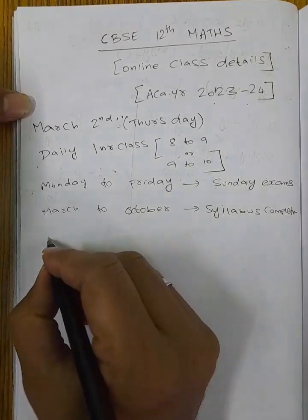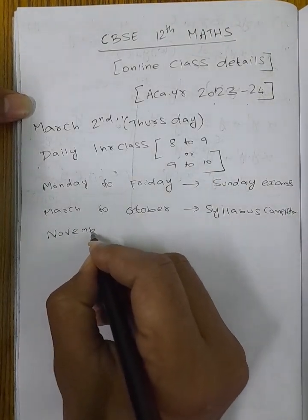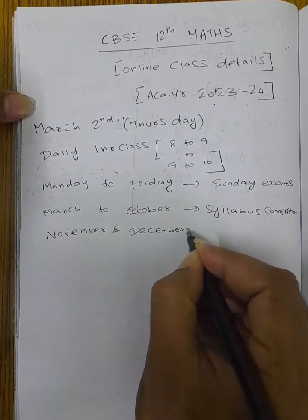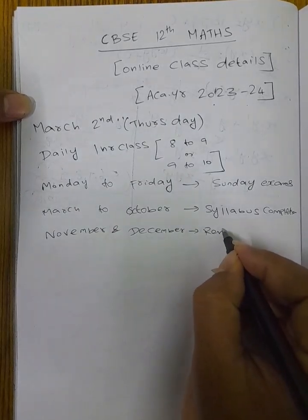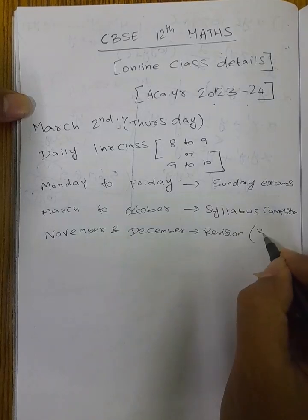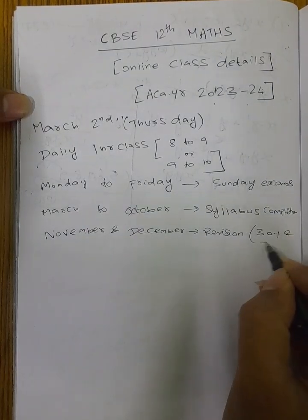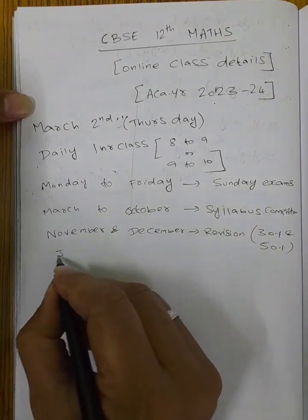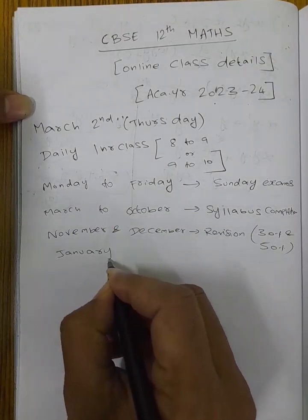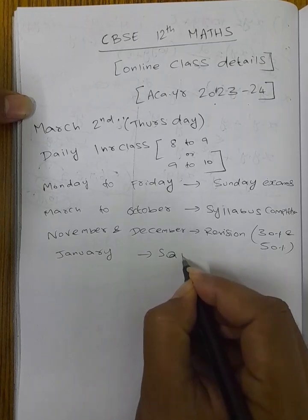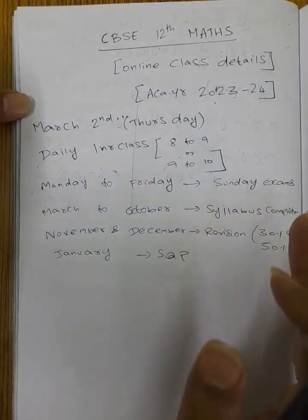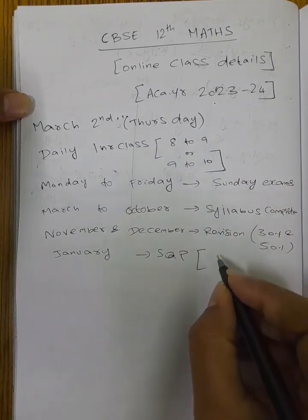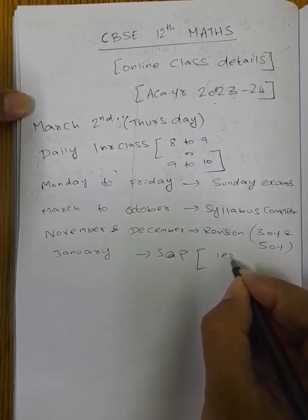In November and December month, full revision — 30% revision and 50% revision in November and December. In January month, total sample question papers. Sample question papers means board example question papers, same pattern, one exam paper.